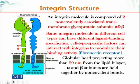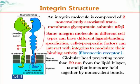Here's an integrin molecule. It is composed of two non-covalently associated transmembrane glycoprotein subunits, alpha and beta. These are transmembrane proteins, meaning they cross the plasma membrane — part of their domain is outside the cell, part is embedded in the plasma membrane, and part is in the cytoplasm. These adhesion molecules also depend on positively charged ions such as calcium or magnesium, depending on the type of integrin.